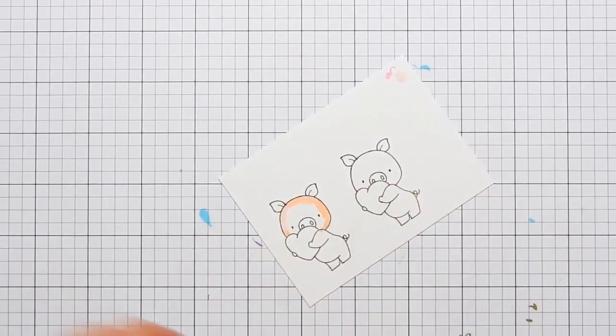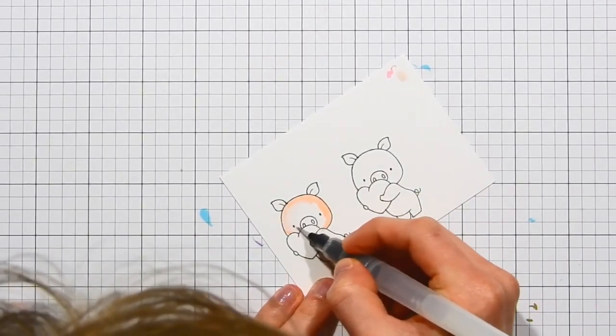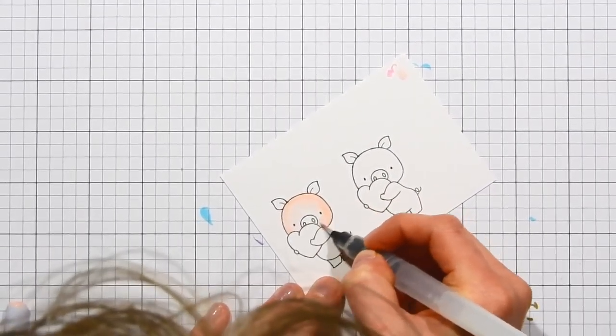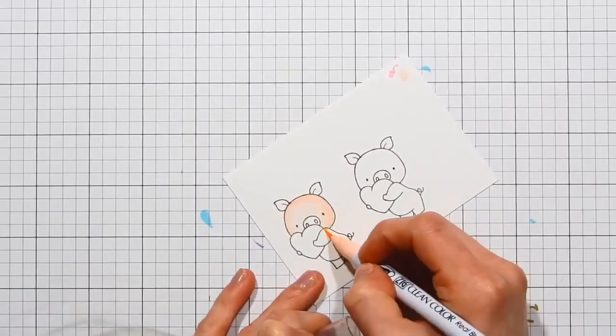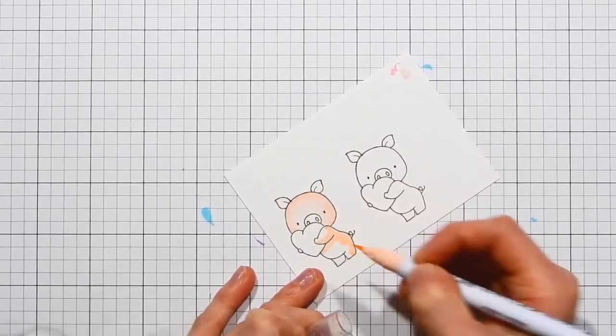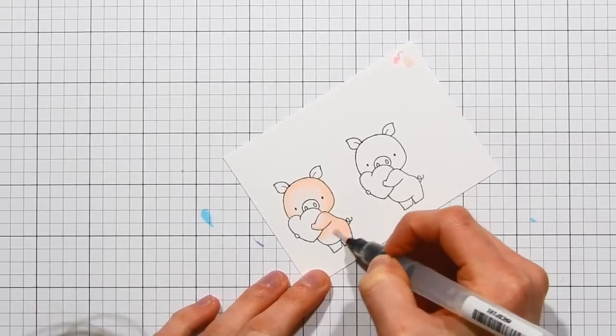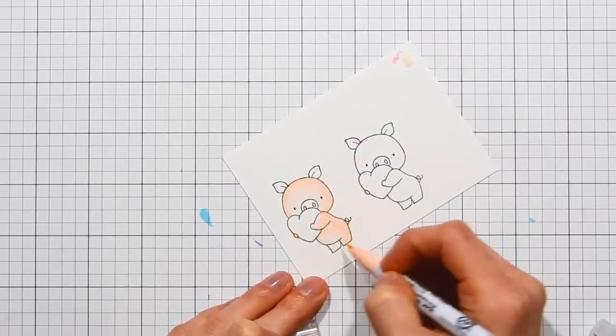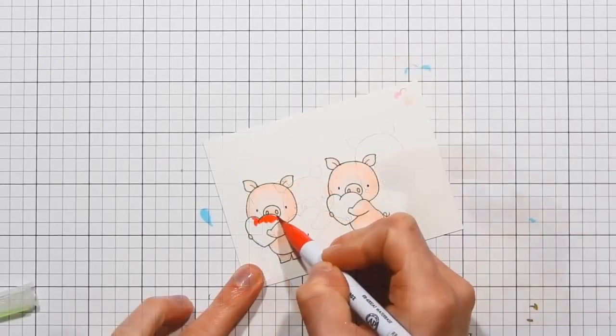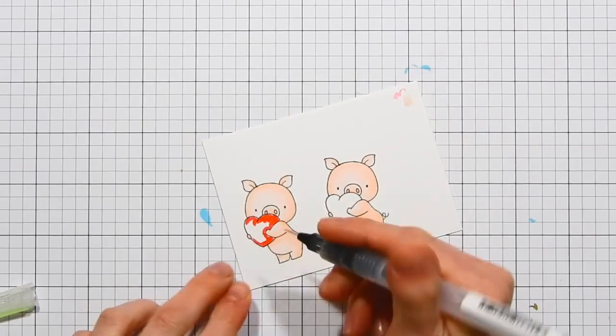Once I created my card base, I'm now taking the Hog Heaven stamp set and I stamped the little pigs onto a piece of watercolor paper. This is Strathmore Bristol smooth paper, and I'm just going to quickly color these little pigs with a tea rose Zig marker and also carmine red. It was very simple shading. I didn't get very detailed with it.